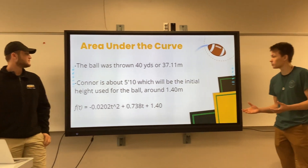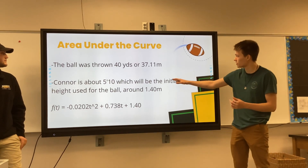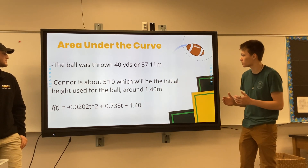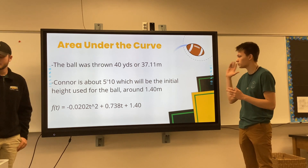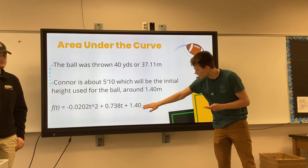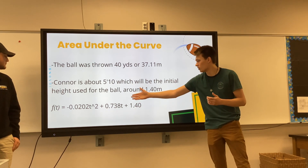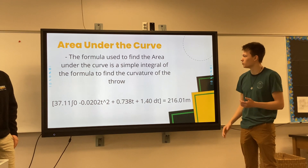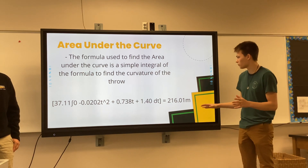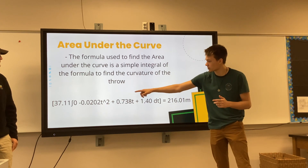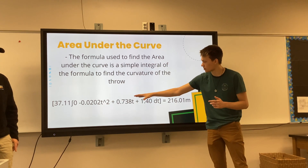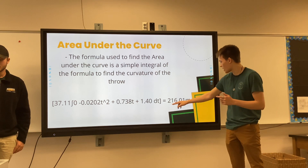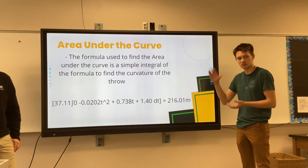For the simplest equation, we have the area under the curve. The distance was about 37.11 meters, and at my height — I'm about 5'10" — with the throw starting at my shoulder, we used that as the initial height. That gives us the formula: negative-almost-zero T squared + 0.73T + 1.4. Using a definite integral from B = 0 to A = 37.11 with that formula, we found the area under the curve is about 216.1 square meters.